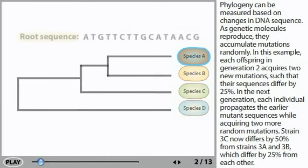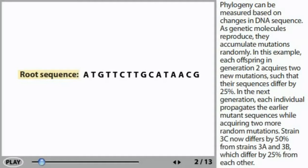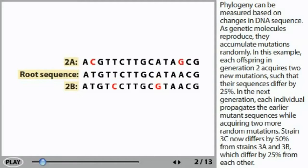Phylogeny can be measured based on changes in DNA sequence. As genetic molecules reproduce, they accumulate mutations randomly.